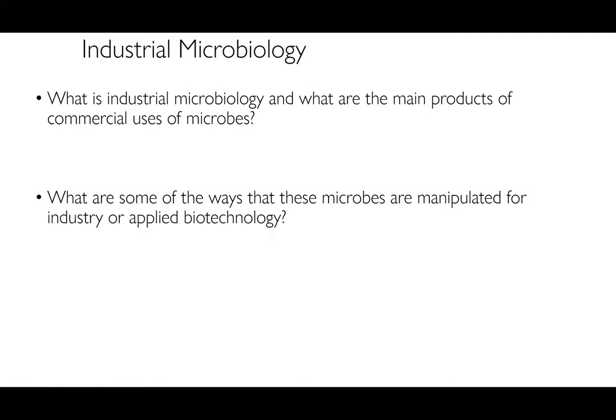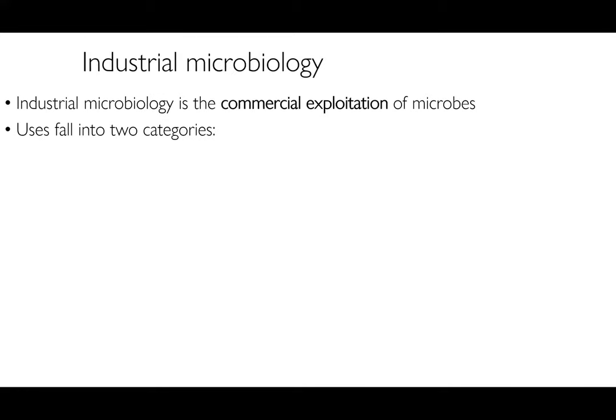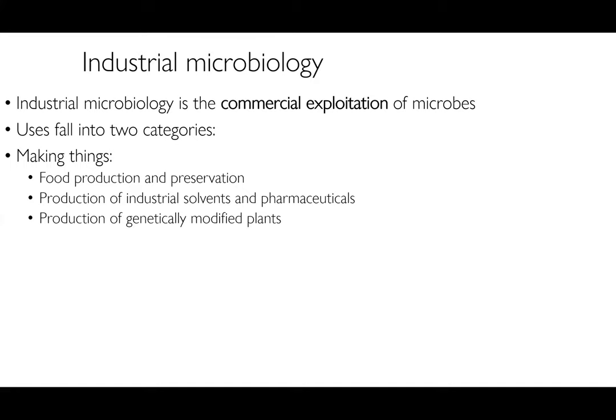From our human microbiome lecture, you should have a solid understanding of how microbes benefit you directly while living on and inside you. Industrial microbiology is the commercial exploitation of microbes, and these typically fall into two broad categories. One is making things — including food production and preservation, production of industrial solvents and pharmaceuticals, and production of genetically modified plants. The second is using microbes for removing things, particularly bioremediation — using life to get rid of problems like industrial waste or oil spills — and we also heavily rely on microorganisms for wastewater treatment.